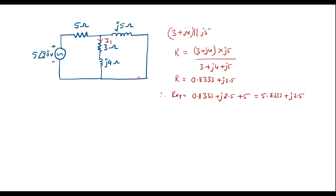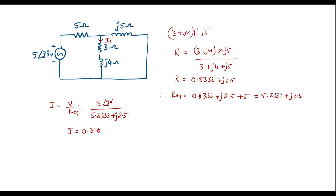Which gives 5.8333+j2.5. So this is the total resistance or impedance of the circuit. Now we will find the current in the circuit. That is, I = V/R, where V is 5∠90 and R equivalent is 5.8333+j2.5. Solving this, we get I = 0.310+j0.724.